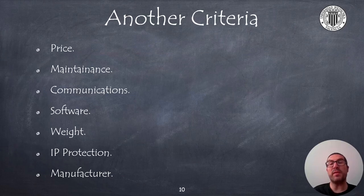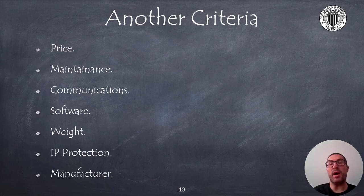Once we have significantly reduced the number of options based on the previous criteria, then other criteria come into play and they are actually the ones that end up helping us to take the final decision. Obviously, the price of a robot is a very important aspect to consider,